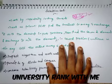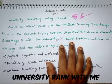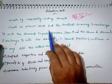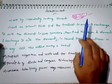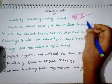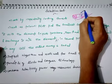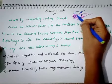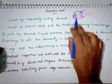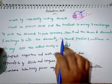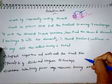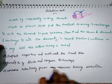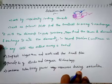Welcome back to the next video on selection sort. Selection sort works by repeatedly finding the smallest element in the array and swapping it with the first element. This process continues until all elements are sorted. It works well for sorting smallest to largest and follows a divide-and-conquer approach, requiring very few resources during execution.